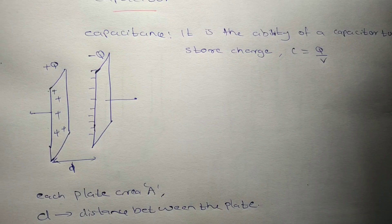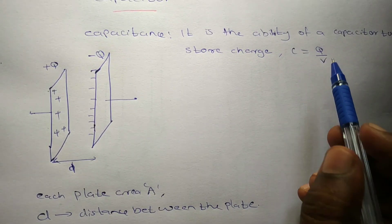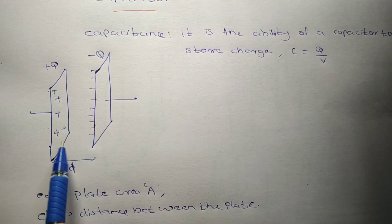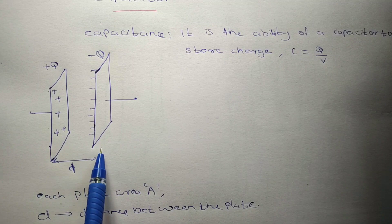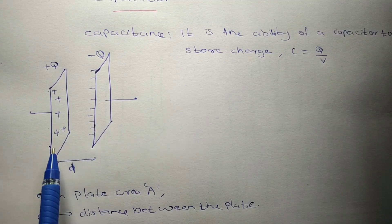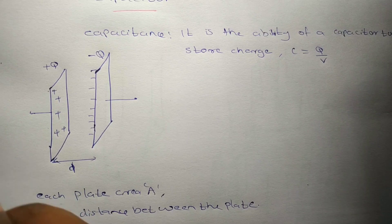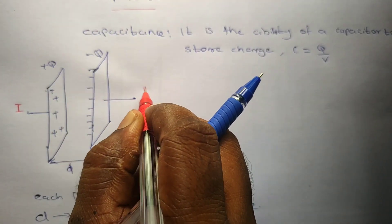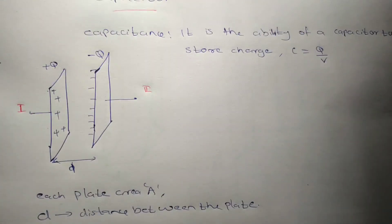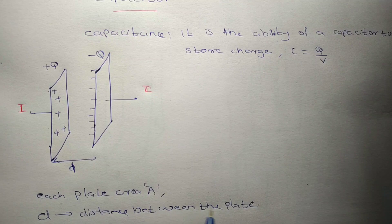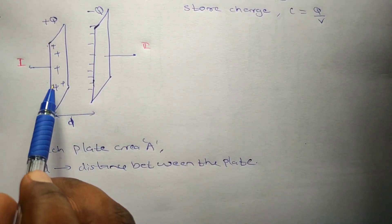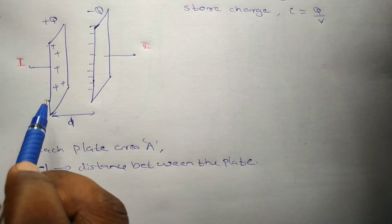Now we are going to find out the capacitance. Capacitance is equal to Q by V, so we need to find out the potential difference between the plates. For that, I am going to find out the electric field. There is region 1, region 2, and the region in between the plates. We are going to find the electric field in all three regions.